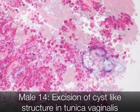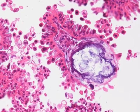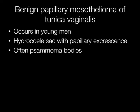This is an example of a benign papillary mesothelioma of the tunica vaginalis. These lesions occur in young men, often with a hydrocele sac with a papillary excrescence, and there may be psammoma bodies associated with the lesions. Histologically there is a vague resemblance to a papillary serous cystadenoma.